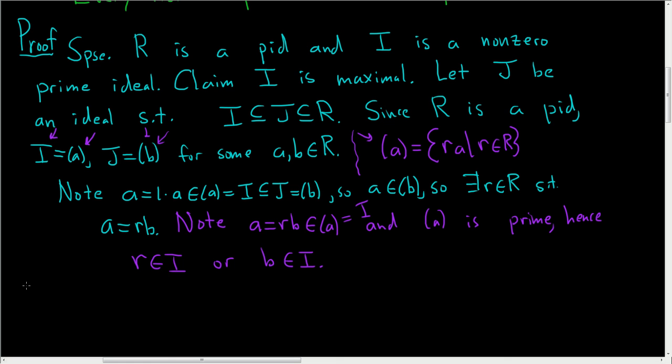If r is in I, then we can write r as equal to, say, sa for some s in R. And now we should be able to rewrite a in a clever way. So then, a, well, that's equal to rb, which is equal to sab, because r is sa.